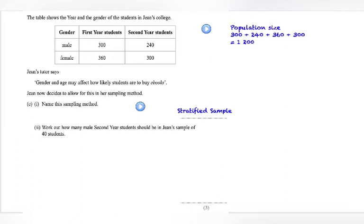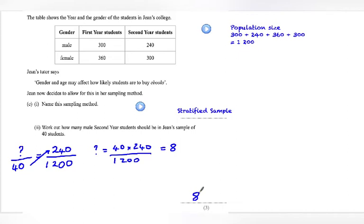So how would I find out the number of male second year students? Well, that's my unknown quantity. And that's going to be out of a sample size of 40. I need to ensure that this proportion or fraction is the same as the total number of male second year students out of the population, total population of 1200. Now, all I need to do is multiply those together and do the division. So my unknown quantity of male second year students would be 40 multiplied by 240 divided by 1200. And I've calculated that to be 8. So we have 8 male second year students in Jean's sample.